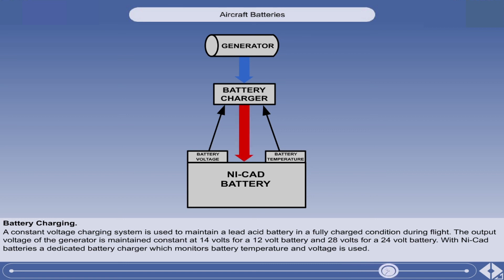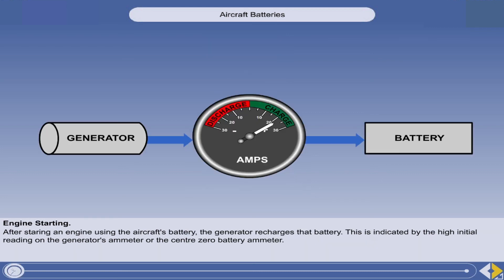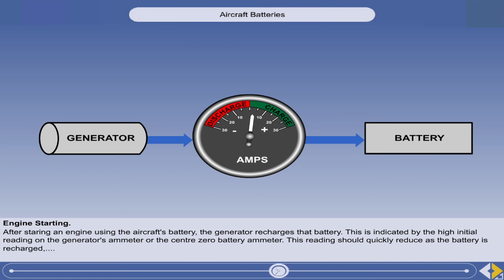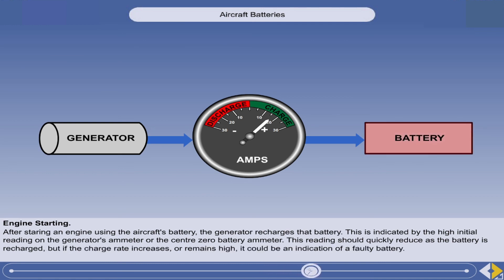Some NICAD battery charging systems use a method known as pulse charging. In this type of system, the battery charger delivers short pulses of charging current. After starting an engine using the aircraft's battery, the generator, when it is online, recharges that battery. This is indicated by the high initial reading on the generator's ammeter, or the centre zero battery ammeter. This reading should quickly reduce as the battery is recharged. But if the charge rate increases or remains high, it could be an indication of a faulty battery.